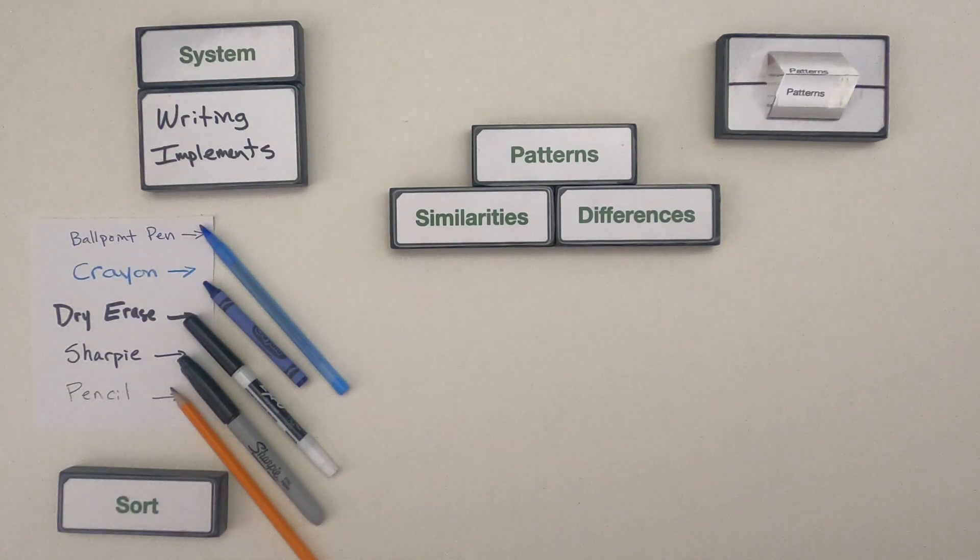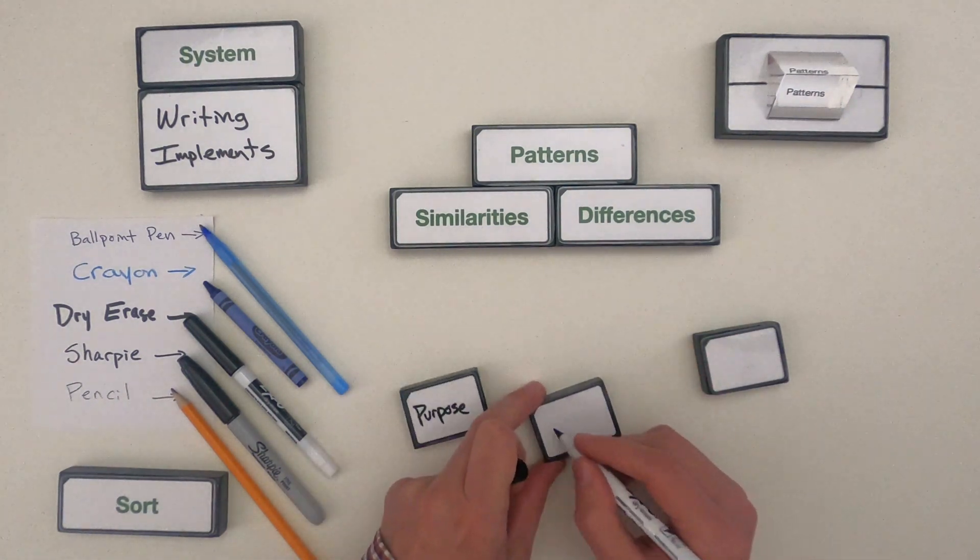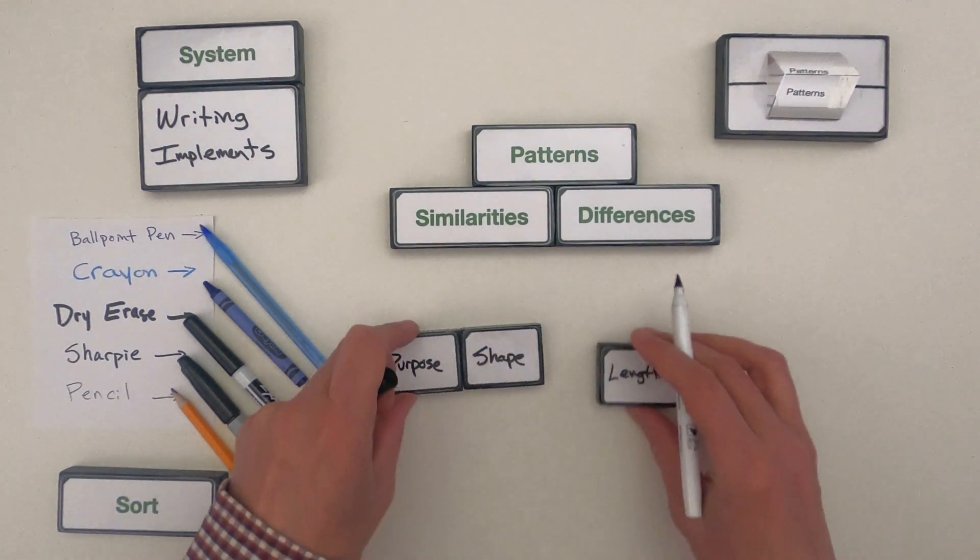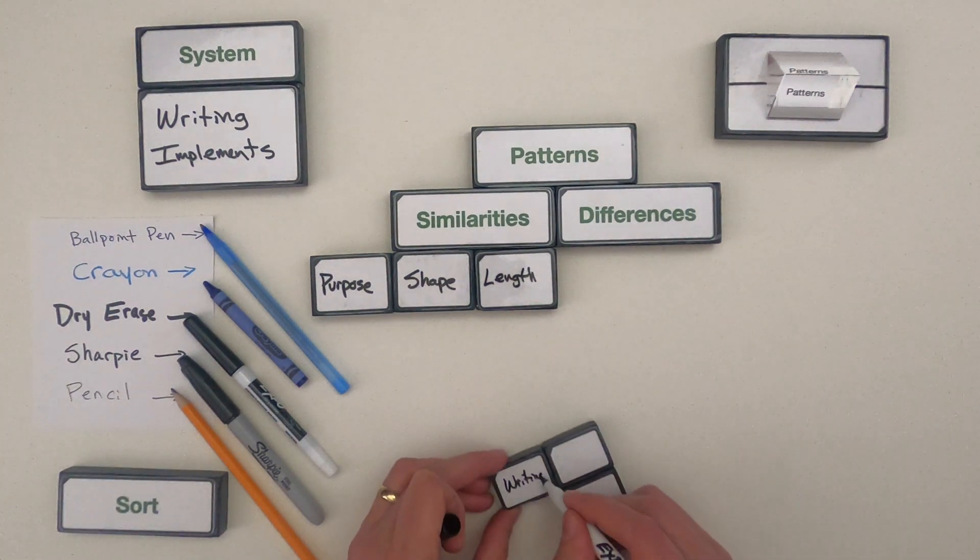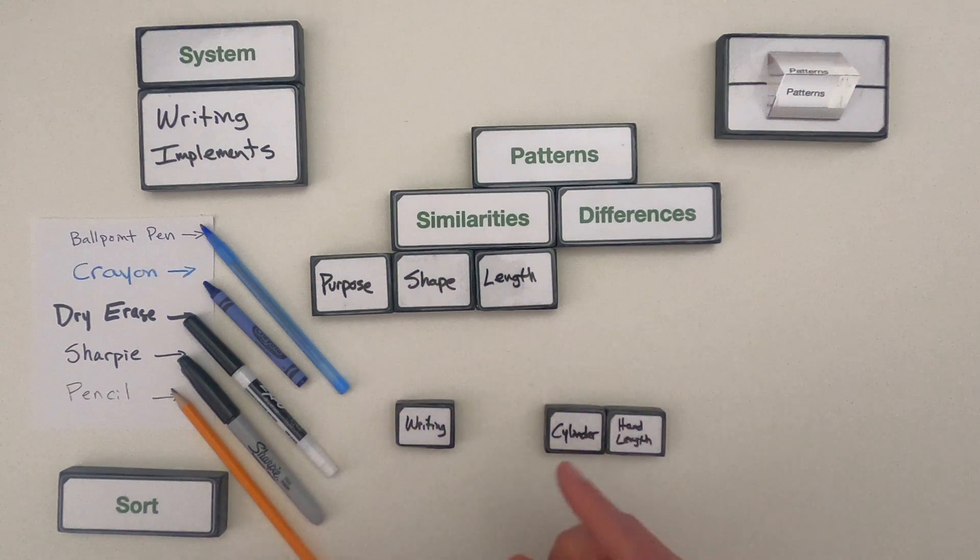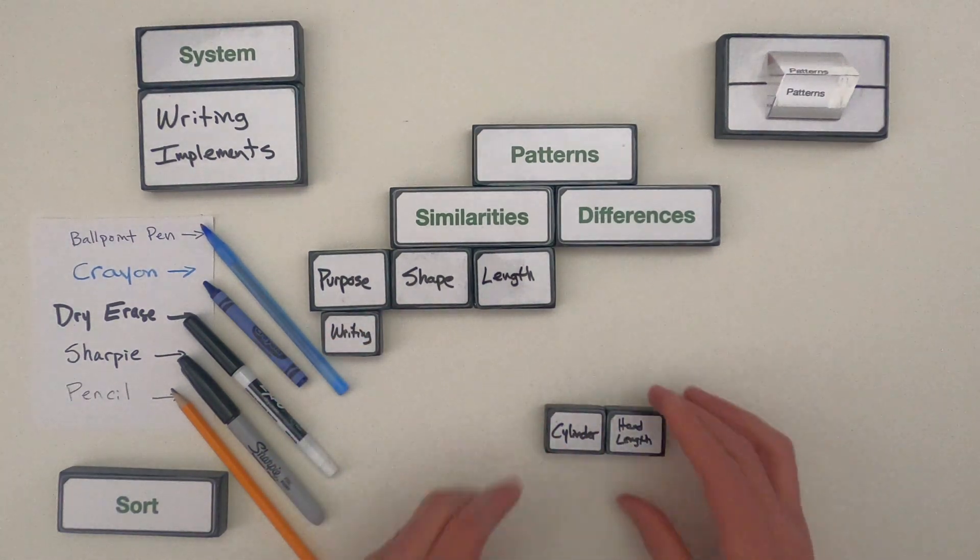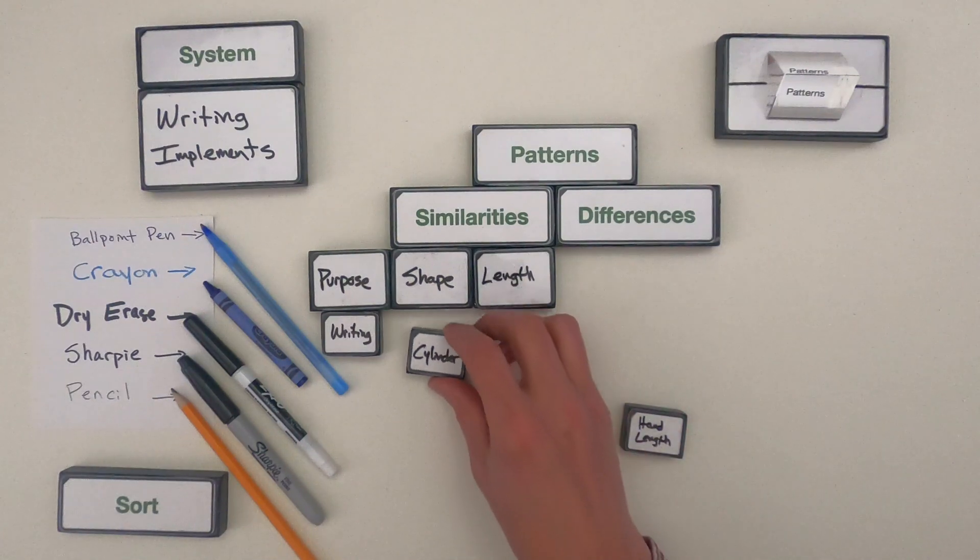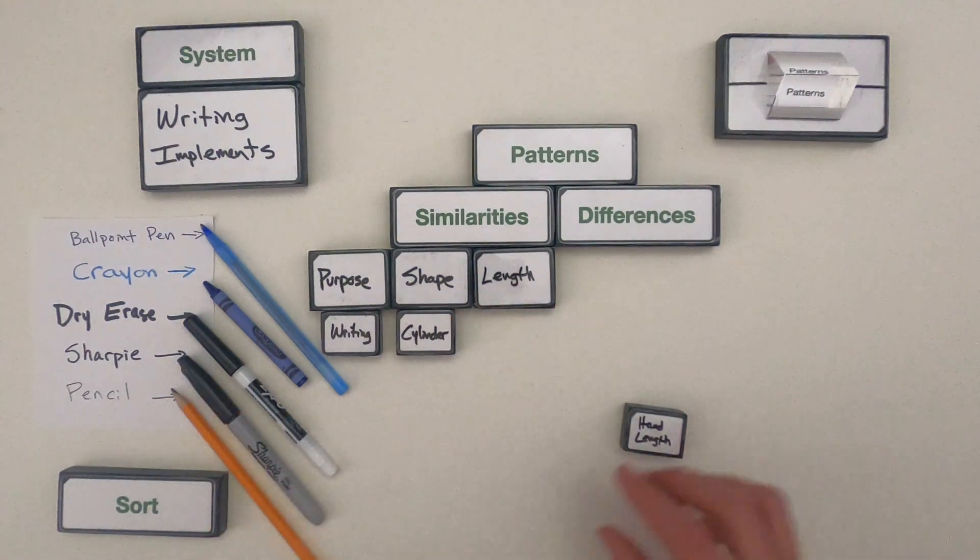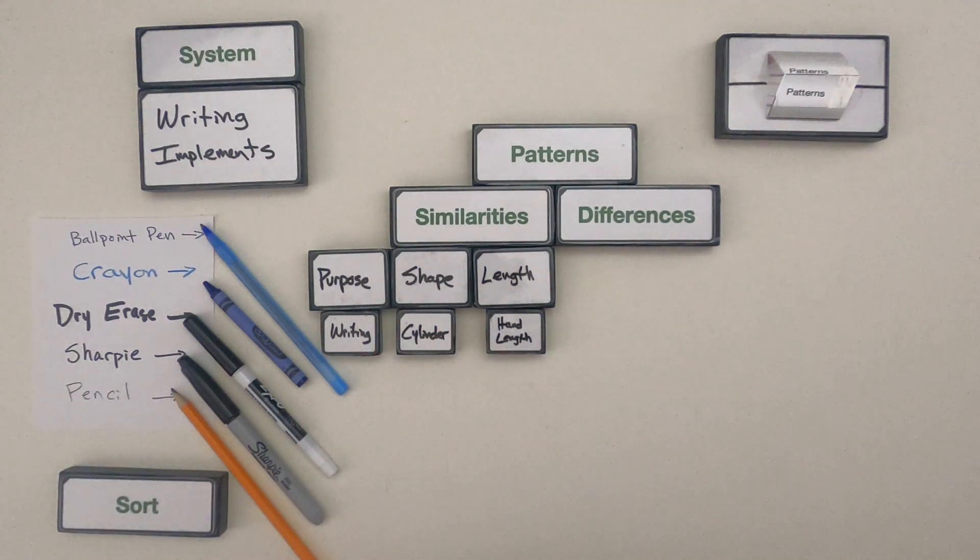All right now that you're back what I'd like to do is start thinking about what are the similarities between all of these writing implements? Let me write those down. Okay so the similarities I see is that they're all used for writing or communicating. The shape in general they all have a cylindrical shape with a point at the end and then the length they're all about the length of your hand which makes sense because you're going to use your hand. Next let me show you what I think the differences are.